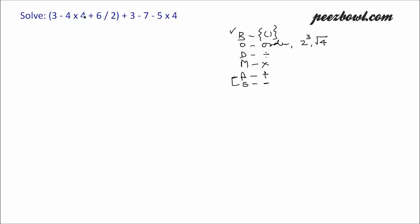In our example, we have parenthesis, which has the highest priority. So we need to perform whatever comes within the parenthesis first. Let me rewrite our arithmetic expression again: 3 minus 4 multiplied by 4 plus 6 divided by 2, plus 3 minus 7 minus 5 multiplied by 4.